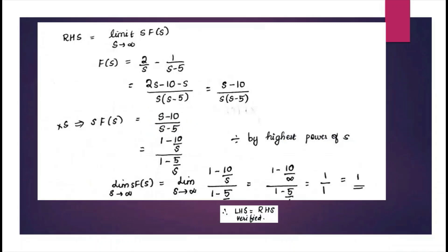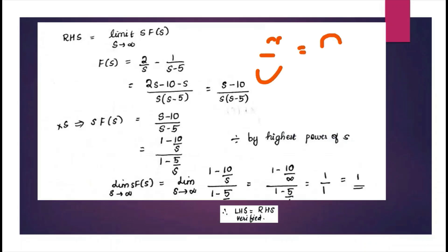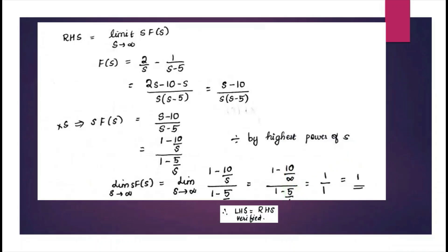Now divide both numerator and denominator by the highest power of s to apply the limit. This gives (1 − 10/s) / (1 − 5/s). Applying the limit as s tends to infinity, any quantity divided by infinity is 0, so 10/s → 0 and 5/s → 0. This equals 1/1 = 1. Both LHS and RHS equal 1, so the initial value theorem is verified.